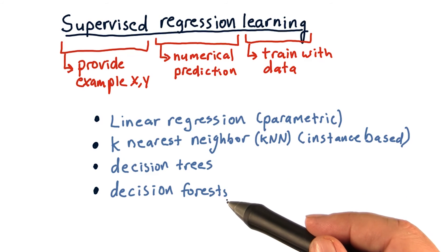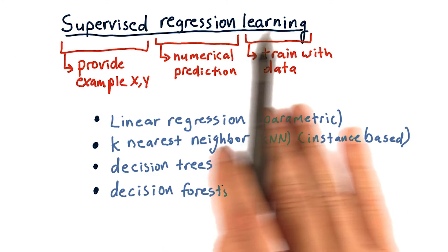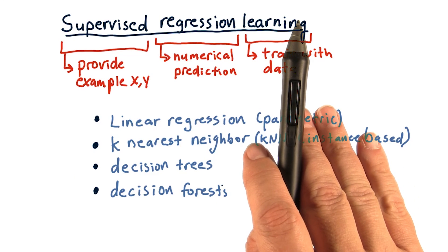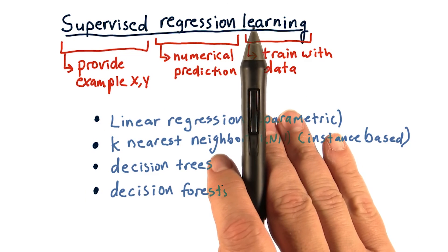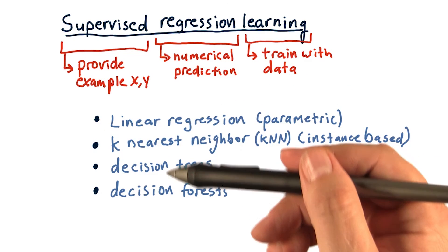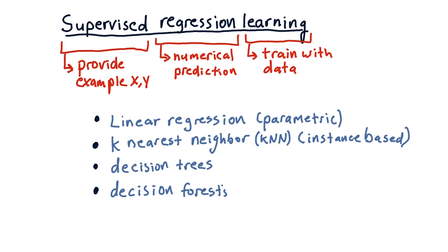Decision forests are simply lots and lots of decision trees taken together. And you query each one to get an overall result. So this is a definition of supervised regression learning, which we're going to use a lot. And these are various algorithms that solve that problem.